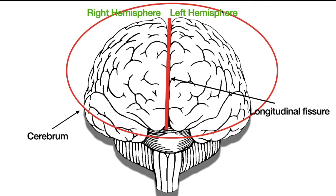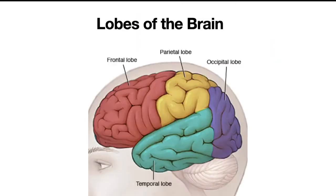Now, this is not from our perspective but rather from the perspective of the brain's owner. So in his view, this part over here is the left hemisphere and this part is the right. I'll go into more detail later, but now let's talk about the lobes — the parts of each of these hemispheres.